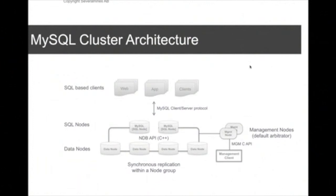We also have management nodes. The management node provides the cluster configuration file — basically a text file describing what your cluster looks like and how much memory each data node needs to allocate. When you start up a node in the cluster for the first time, it connects to the management node to get the cluster configuration file. It's very important, at least in production, to have redundancy for the management node.